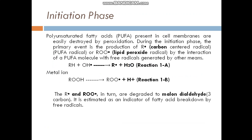Initiation phase: Polyunsaturated fatty acids — that is, PUFA present in the cell membrane — are easily destroyed by peroxidation. During the initiation phase, the primary event is the production of a carbon-centred radical, that is a fatty acid radical or PUFA radical or lipid peroxide radical, by the interaction of a PUFA molecule with free radicals generated by other means.